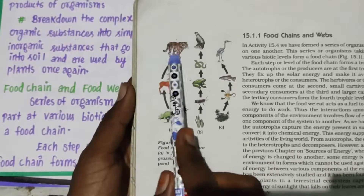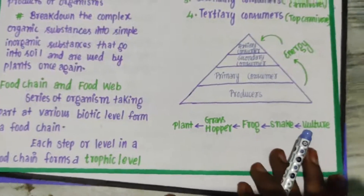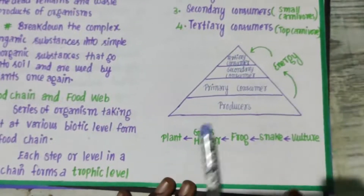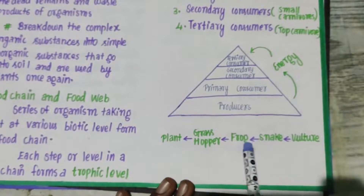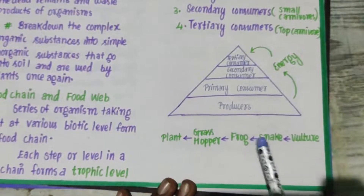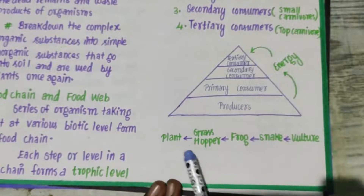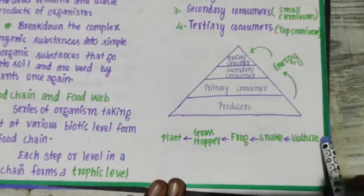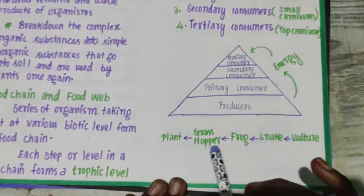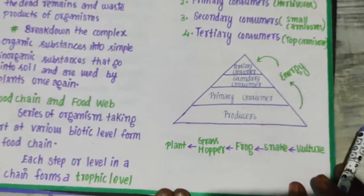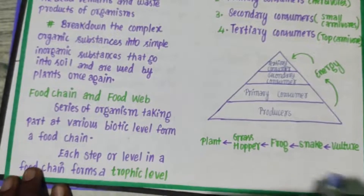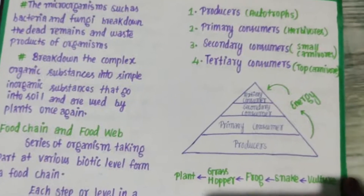Each step or level in a food chain forms a trophic level. Every organism in a food chain is known as a trophic level. If they ask you the definition for trophic level: each step or level in a food chain forms a trophic level. That is what you have to write.